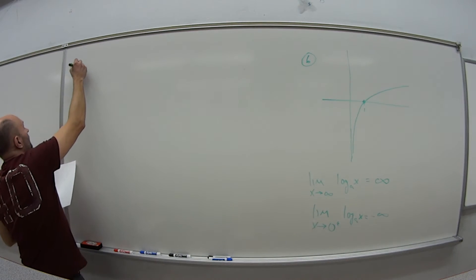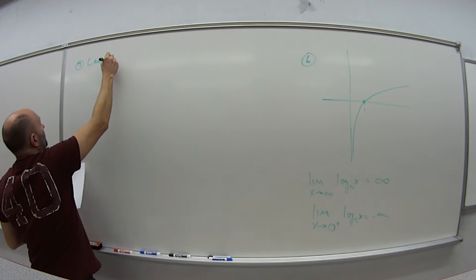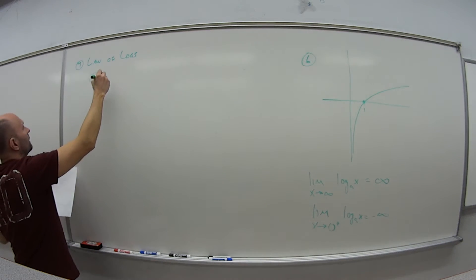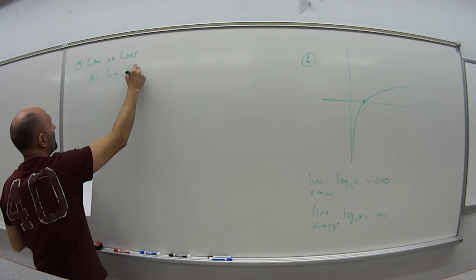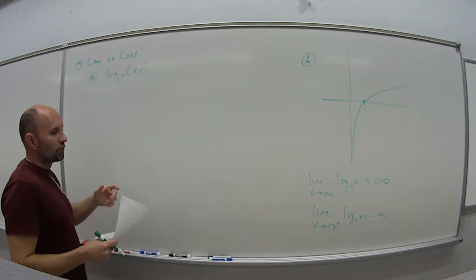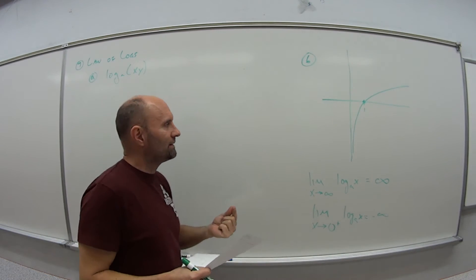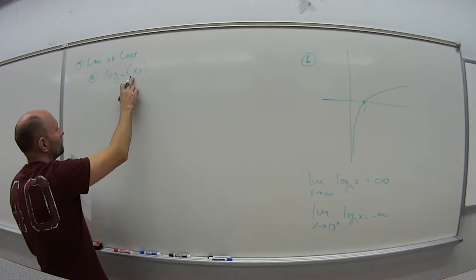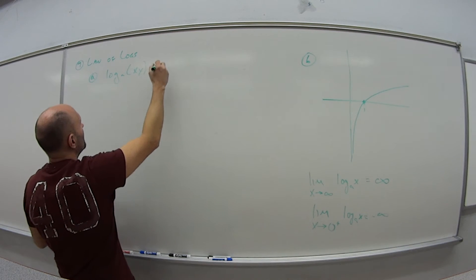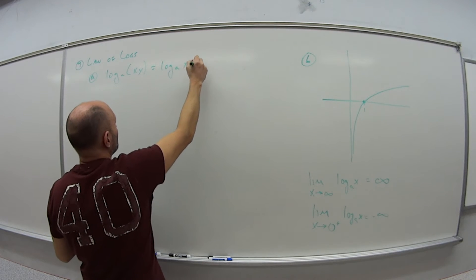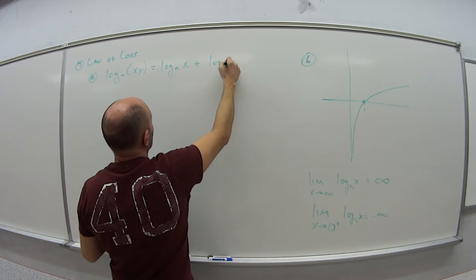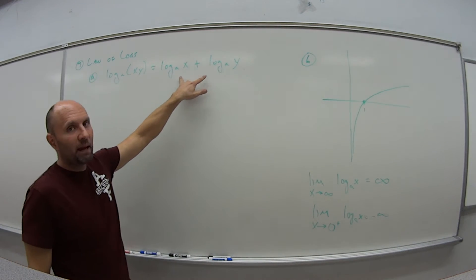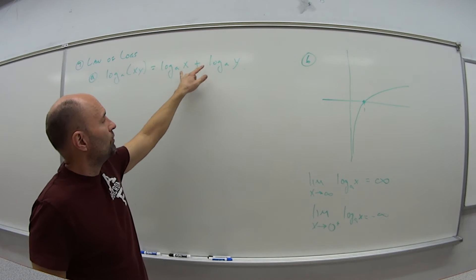Number seven is our law of logs. The first one we have is that the log base A of X times Y—if I have two functions that are multiplied together inside this parenthesis, or even if it's not inside a parenthesis, but if they're just multiplying together here—this is the same as log base A of X plus log base A of Y. If this is a product, I can expand it. I can break it apart into an addition equation. And this goes either way. If I'm given this piece, I can simplify it by just multiplying the X and the Y.